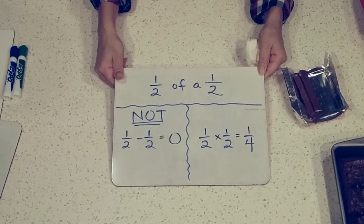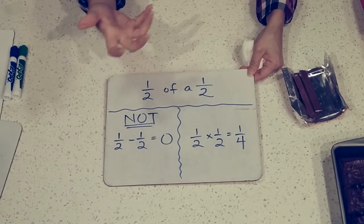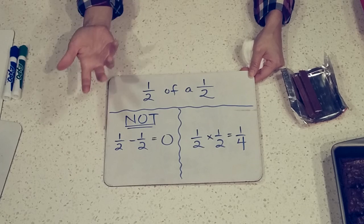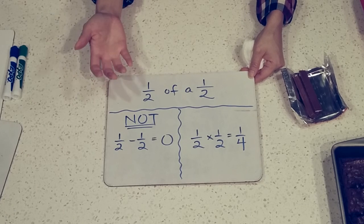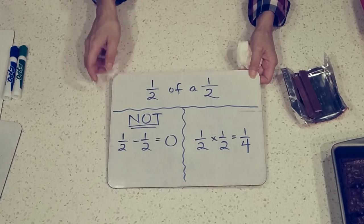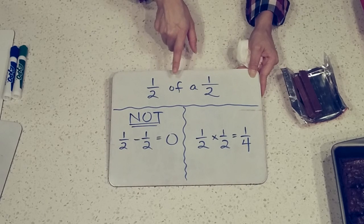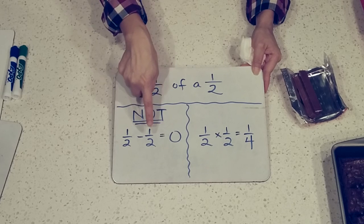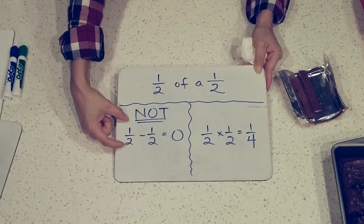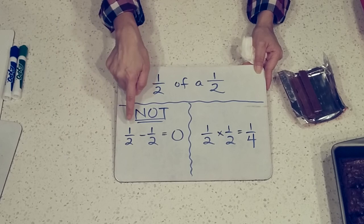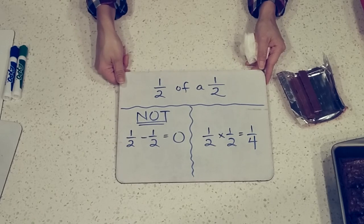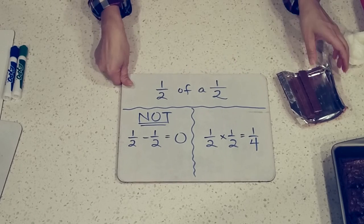When kids hear 'taking half of something,' they think of subtracting, because usually when you take away, you're subtracting. But here, you're not subtracting half from the whole — you're taking half of a half. So it is not half minus a half. If I had half left and gave Diego half of what I had left and you subtracted, it ends up being zero. When I gave Diego half of what I have left, did I have zero left over?